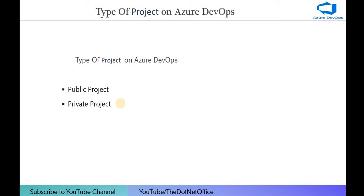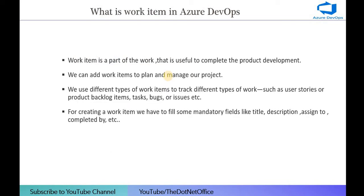How many types of projects can we create in Azure DevOps? There are two types: public and private. A public project can be accessed without any credentials and is publicly accessible. A private project requires credentials and is available only for authenticated users.